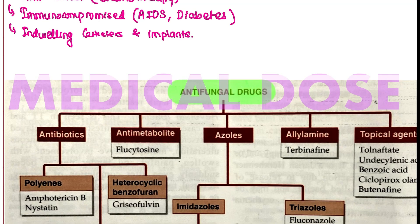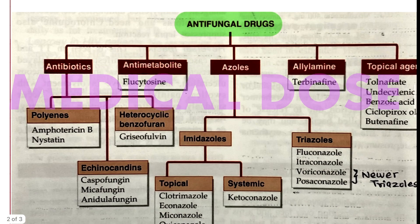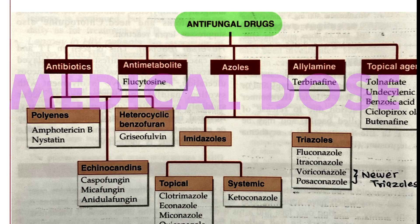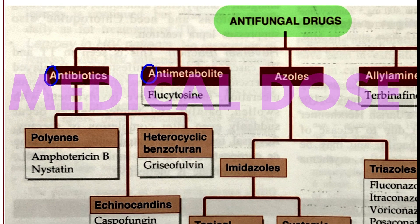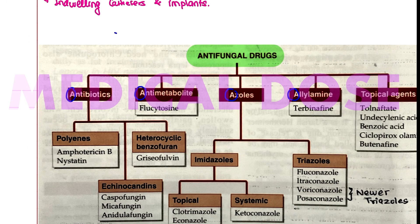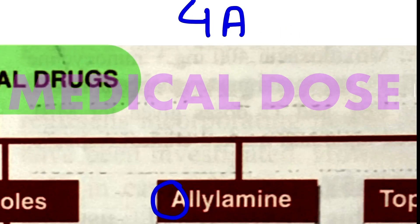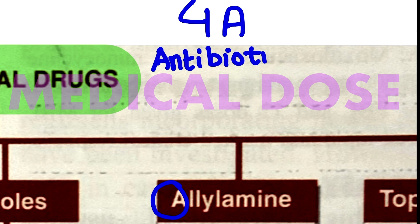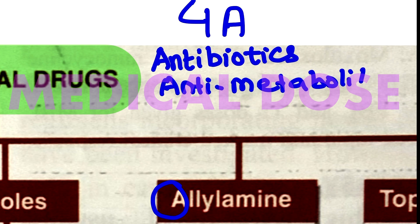This is a very easy classification, so you need not memorize these middle ones. What you need is to memorize the headings. The categories are: antibiotics, anti-metabolites, azoles, and allylamines.